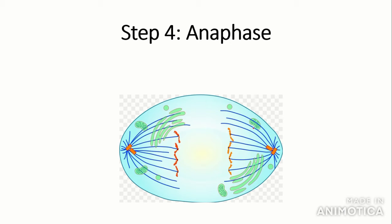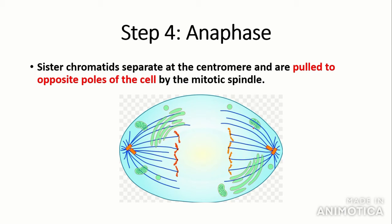The next stage is anaphase. Anaphase is when sister chromatids separate at the centromere and are pulled to opposite poles of the cell by the mitotic spindle. Now the key term here is sister chromatids. Now the term sister here means the chromatids, two chromatids that make up one chromosome. So they are pulled to opposite poles or opposite sides of the cell by the spindle which contracts to allow this.